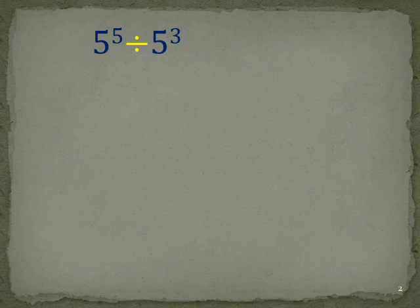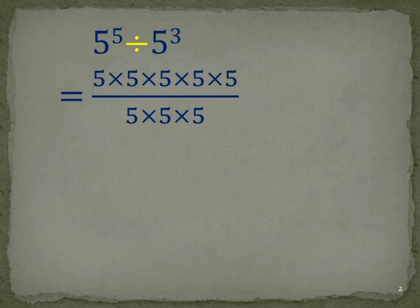Let's consider 5 to the power of 5 divided by 5 to the power of 3. If we write this as a fraction and in expanded form, we have 5 fives on the top and 3 fives underneath.